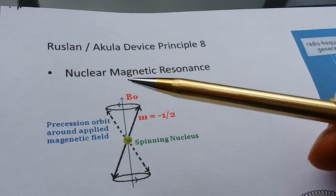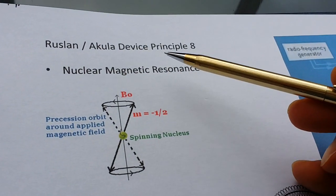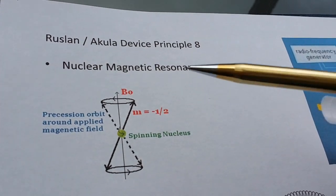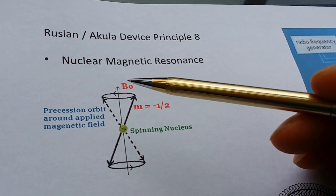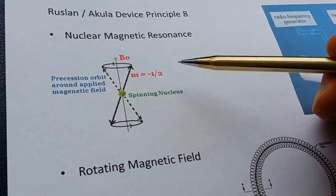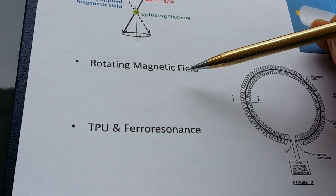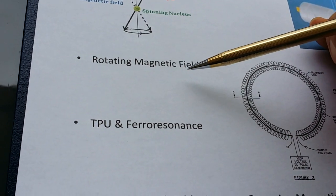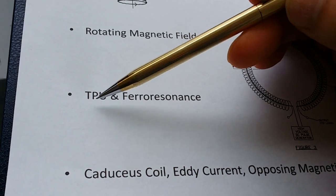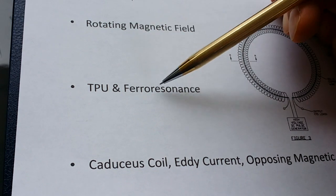This video is the most important compared to the other seven videos about the Ruslan Akula device principle. Akula mentions about NMR, and also Ruslan mentions about the rotating magnetic field, and also other free energy developers like the TPU and the ferroresonants.